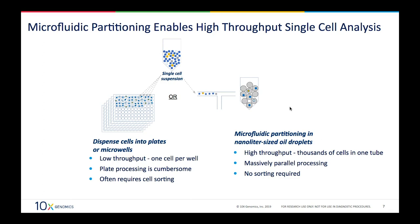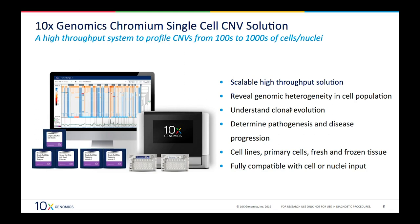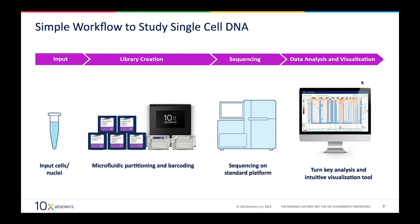10x Genomics has different systems that can study single cells or different analytes using microfluidic partitioning, including transcriptomics and epigenomics. Today I'd like to talk about the single-cell DNA solution. This is a high-throughput system that allows you to profile copy number variations of populations of cells ranging from hundreds to thousands of cells. It's a high-throughput solution because you analyze all those cells in one simple tube following one easy workflow. It can be used to study heterogeneity in cell populations and understand clonal evolution. The system is compatible with cell lines, primary cells, fresh tissue, and nuclei derived from frozen tissue.